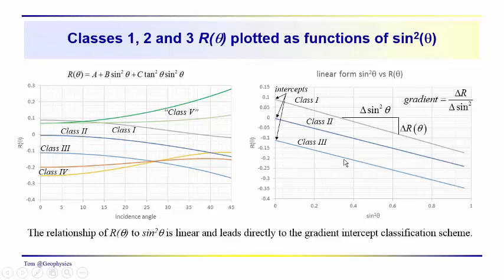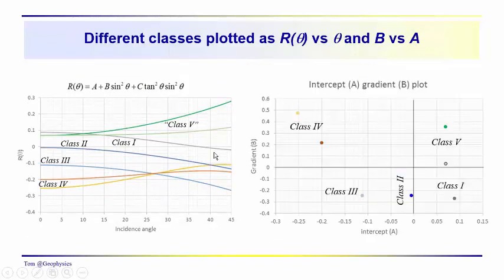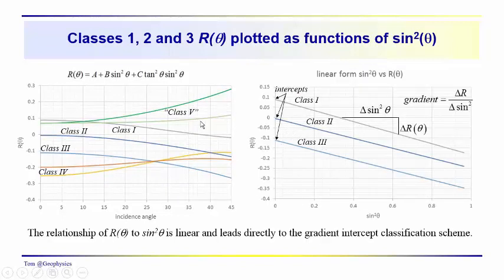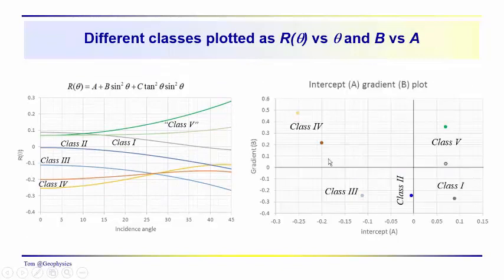Class three, we'll see a larger negative impedance contrast than we would otherwise, just looking at the normal incidence reflectivity. So this intercept gradient approach, for each one of these curves we have a gradient, we have the intercept. We can plot them up in this intercept gradient plot so that the class one, two, and three anomalies fall down here. You can see they have a little bit different gradients. These two are identical. This one is a little bit larger, the class one here.